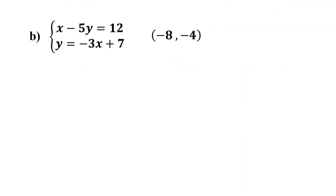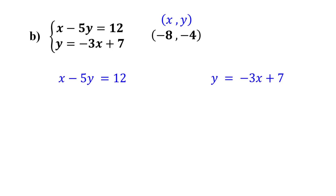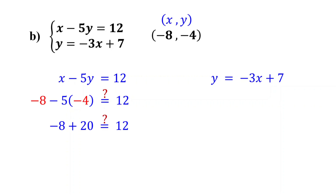Does the ordered pair (-8, -4) satisfy this system of equations? Negative 8 is the x value and negative 4 is the y value. Just like before, our initial step is to substitute these values into both equations. Starting with the first equation, plug in negative 8 for x and negative 4 for y. Negative 5 times negative 4 equals 20. Negative 8 plus 20 is 12, and indeed 12 is equal to 12. So the ordered pair satisfies the first equation.